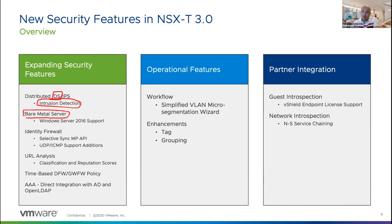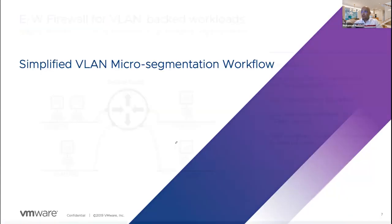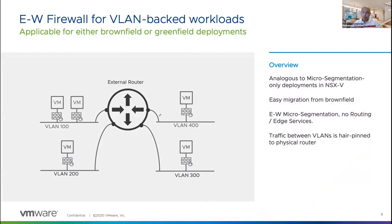For bare metal servers, customers have been asking for this. We've added Windows 2016 support, with Windows 2019 coming soon. We're also pushing for Windows 2012, though that's not confirmed yet. We'll continue adding more Windows operating systems. From a security perspective I'll cover identity firewall updates — now supporting Windows 2019 domain controllers for authentication. URL analysis is coming. We've improved micro-segmentation operations, and improved guest introspection and network introspection in NSX-T.